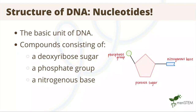Now let's discuss the structure of DNA. Specifically, we are going to cover the basic unit of it, known as nucleotides. These are compounds consisting of three molecules, which are a deoxyribose sugar, a phosphate group, and a nitrogenous base. We can see this structure here to the right.